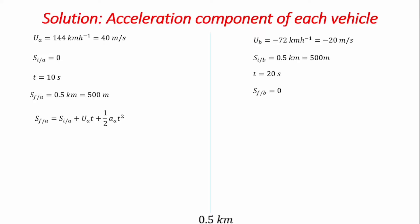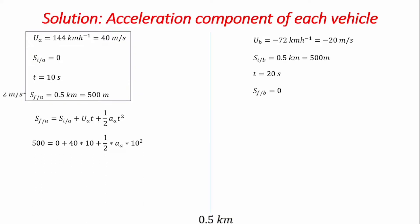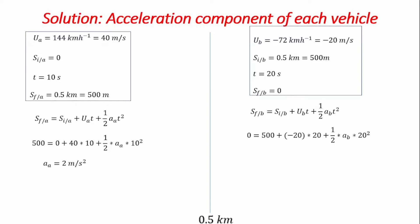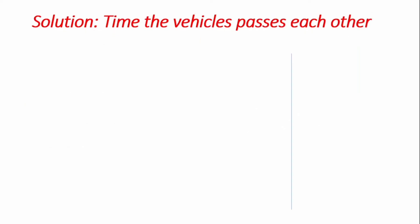Using the equation x_final = x_initial + ut + (1/2)at², we input all the known variables for vehicle A. Evaluating the equation gives us an acceleration for vehicle A equal to 2 meters per second squared. Applying the same equation for vehicle B with its variables gives an acceleration of minus 0.5 meters per second squared, meaning vehicle B's acceleration is directed away from the positive x axis.